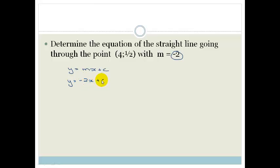Now we need to find the y-intercept, but the nice thing is that we can just substitute this into this equation. So this would be our x and that would be our y. Our y which is a half is equal to minus 2 times by x which is 4 plus c.